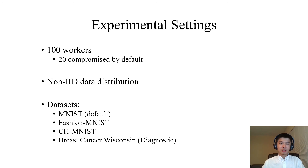This slide shows our experimental settings. We assume there are in total 100 workers and 20 of them are compromised by default. We consider non-IID data distribution, which is common in practice. We evaluate our attacks on four different datasets: MNIST, Fashion MNIST, CH-MNIST, and the Breast Cancer Diagnostic Dataset. We use MNIST as the default dataset and will show those results in the following slides.